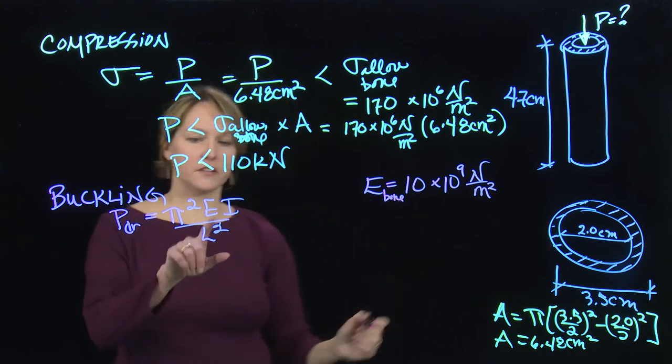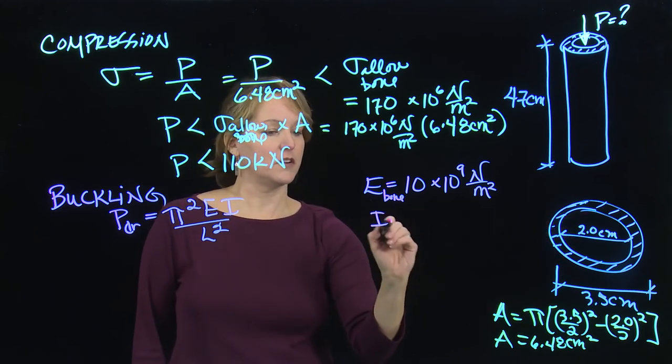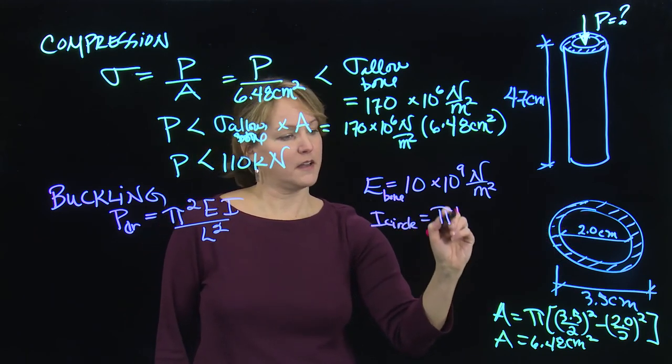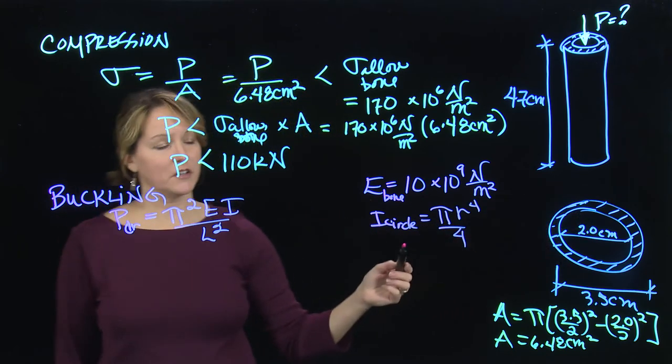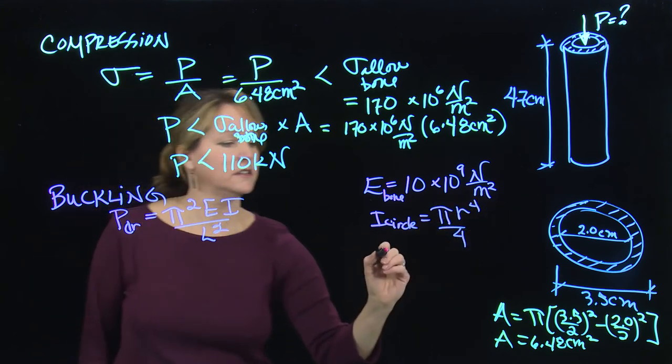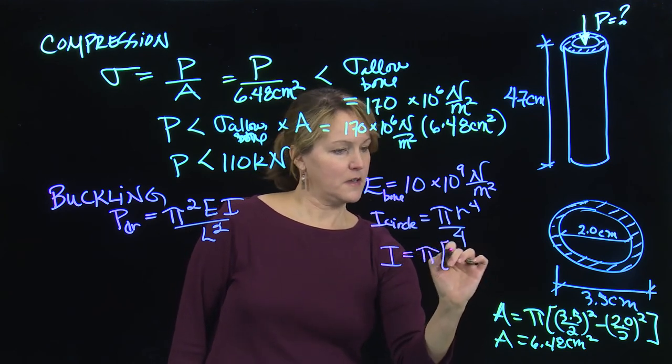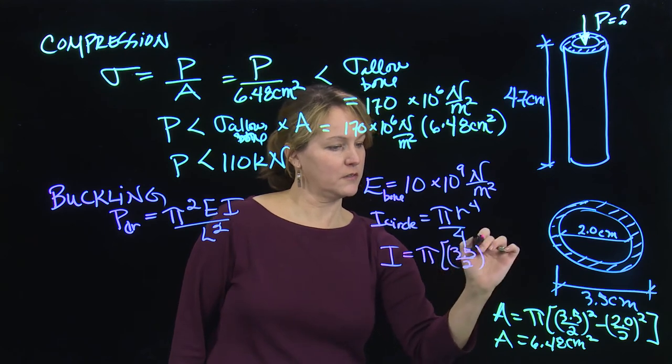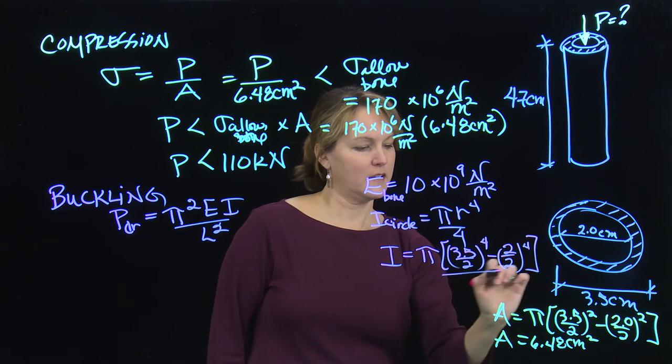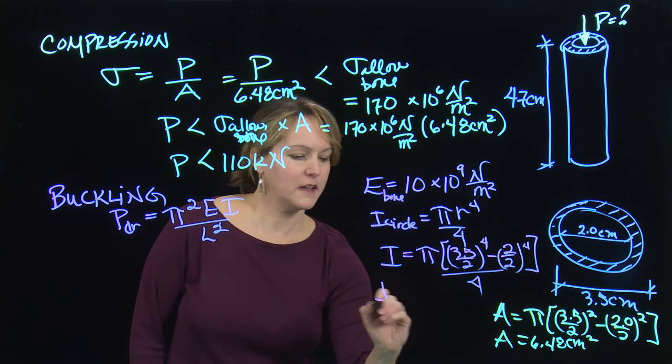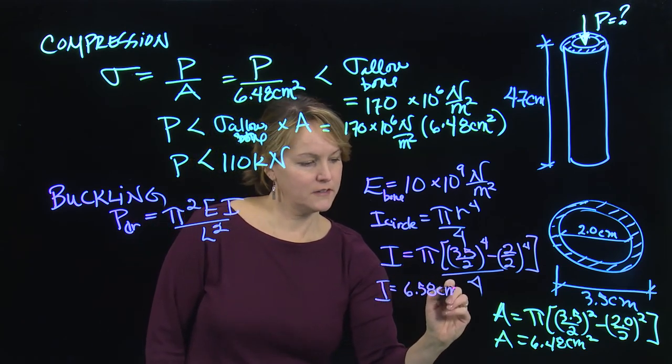I also need for this cross section, the moment of inertia is related to the cross sectional shape. So for a circle, the moment of inertia is pi r to the fourth over four. So for my shape, it would be the moment of inertia of the outer circle minus the moment of inertia of the inner circle. Again, that's the resistance to bending. In this case, it will be pi times 3.5 over 2 raised to the fourth minus 2 over 2 raised to the fourth. And that whole thing divided by 4. And I calculate that moment of inertia as 6.58 centimeters to the fourth.